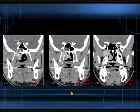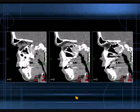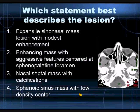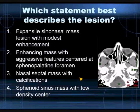Coronally formatted images and sagittal reconstructed images from that same examination. Which statement best describes this lesion? An expansile sinonasal mass lesion with modest enhancement? An enhancing mass with aggressive features centered at the sphenopalatine foramen? A nasal septal mass with calcifications? Or a sphenoid sinus mass with a relative low-density center? Please enter your choice.